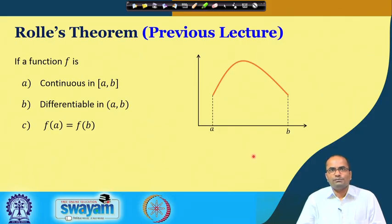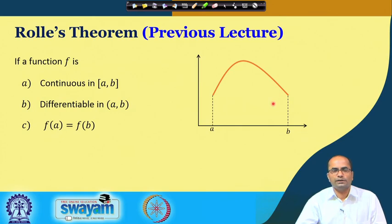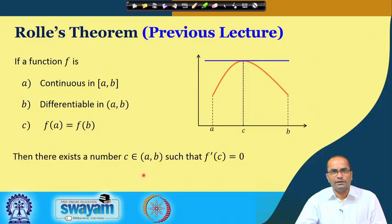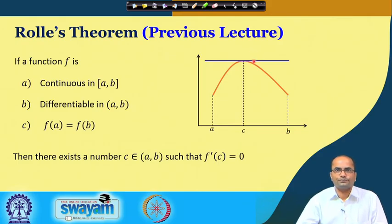Let me recall from the previous lecture. If a function is continuous on a closed interval and differentiable on the open interval, and the function values at the endpoints are equal, then there exists a number in the open interval such that the derivative vanishes at that point. The geometrical interpretation is clear from the figure: the tangent at that point is parallel to the x-axis.